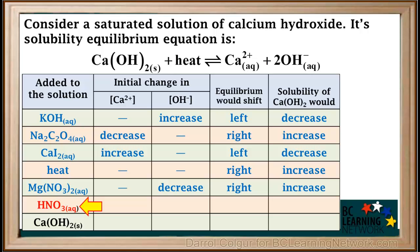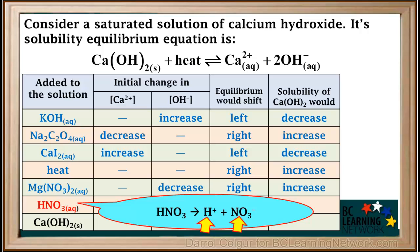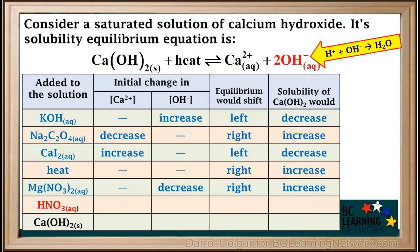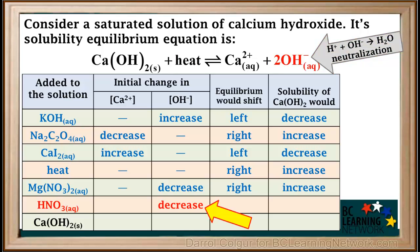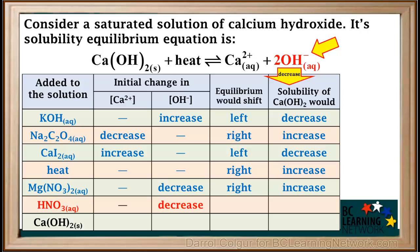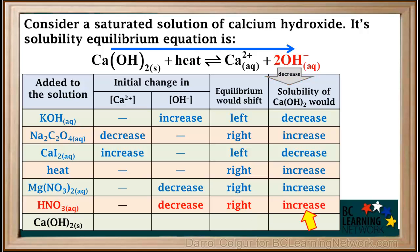Next we'll consider the addition of aqueous HNO₃, which is called nitric acid. Nitric acid is a strong acid, so it completely ionizes into H⁺ and nitrate ions. Nitrate ions are spectators so we can discard them. Nitric acid supplies H⁺ ions, and it is known that H⁺ ions react with OH⁻ ions to form water, as shown by the net ionic equation inside the yellow arrow. The reaction of H⁺ with OH⁻ is called neutralization. This will use up hydroxide ions and make their concentration decrease. There will be no initial change in the concentration of calcium ions. Decreasing the concentration of hydroxide ions will cause the equilibrium to shift to the right, which will cause the solubility of calcium hydroxide to increase.